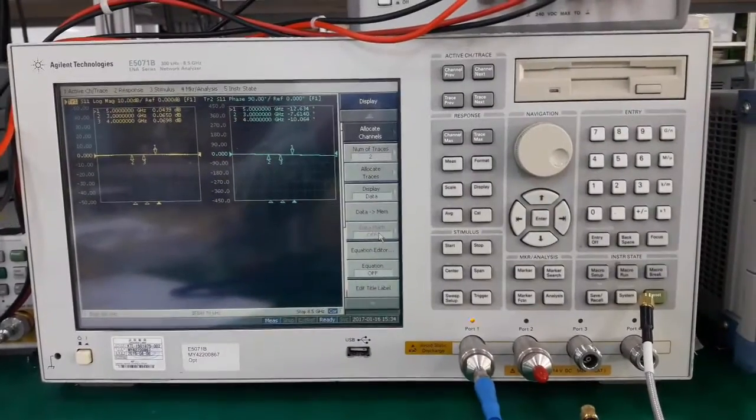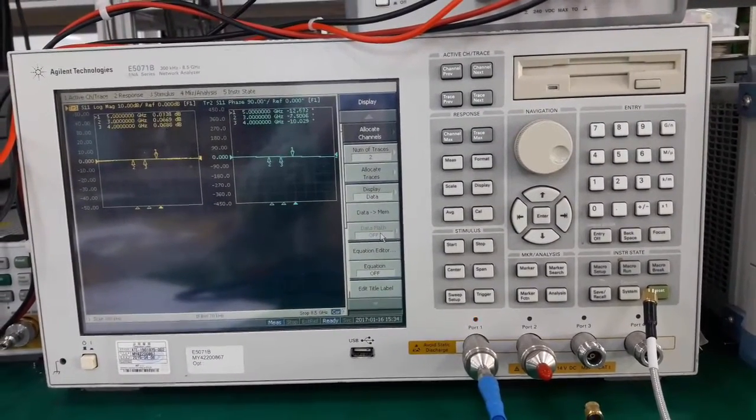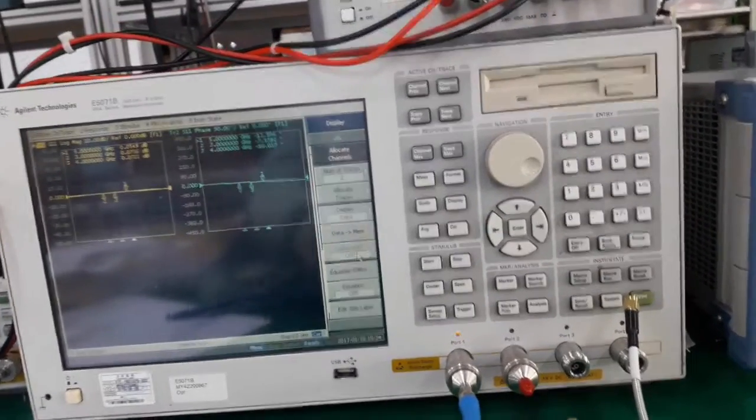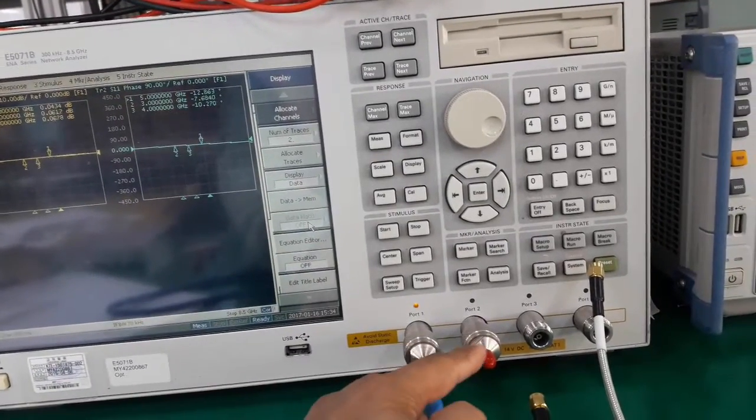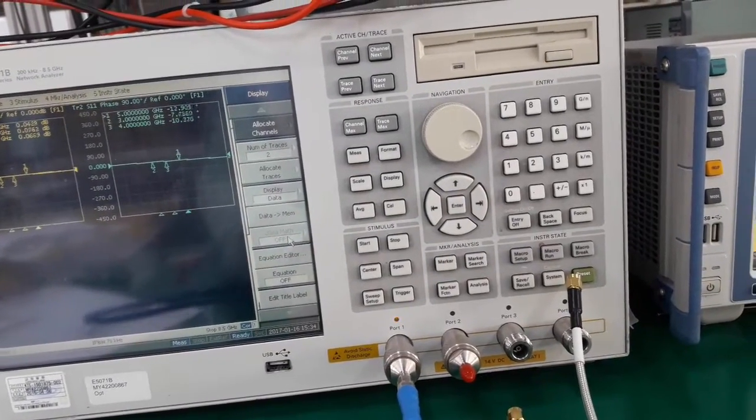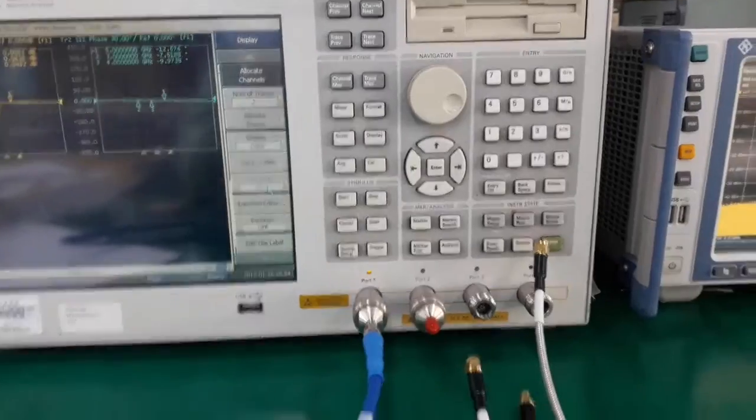This is the network analyzer that I'm going to use for measurement. It has four ports. You can see 1, 2, 3 and 4. I'll be mostly using the port 1.